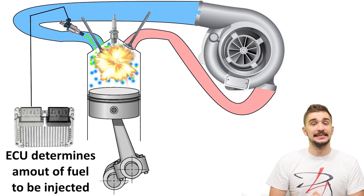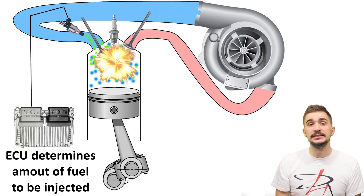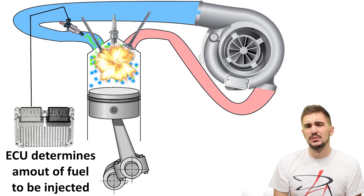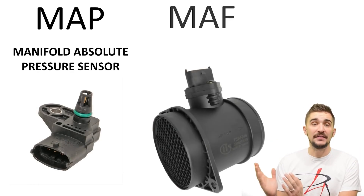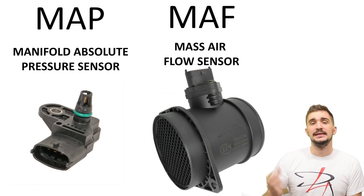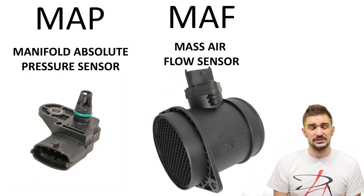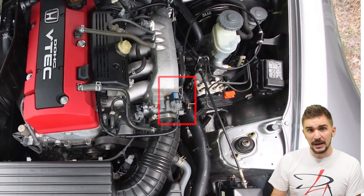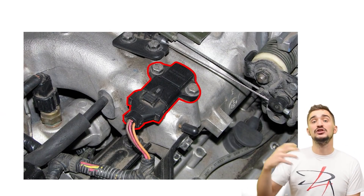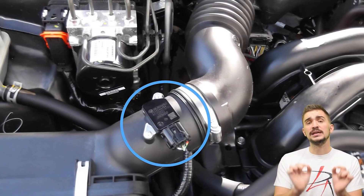Your ECU has the task of matching the incoming air mass with the correct mass of fuel. To do this, the ECU needs to know how much air is coming into the engine. Most modern fuel injected engines rely on either a MAP (manifold absolute pressure) sensor, a MAF (mass airflow) sensor, or both to measure the air coming into the engine. The MAP sensor sits in your intake manifold and measures manifold absolute pressure and makes air mass calculations based on this pressure. A MAF sensor sits behind your intake air filter and directly measures air mass.